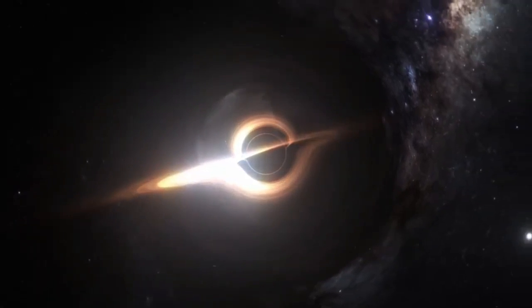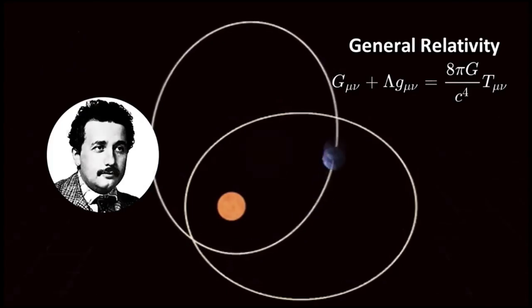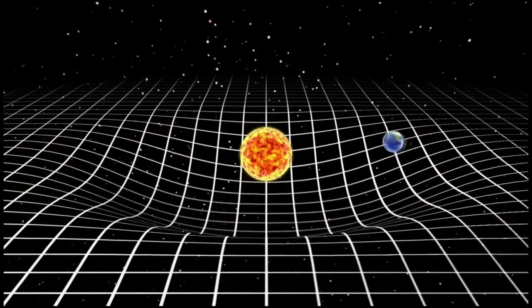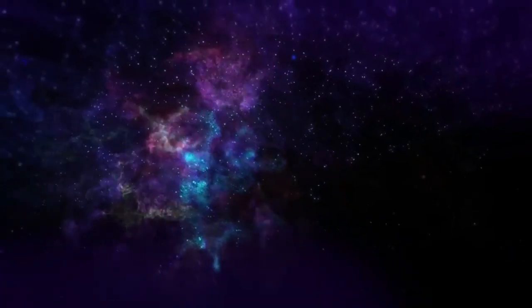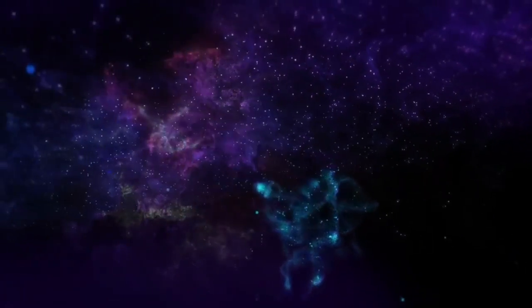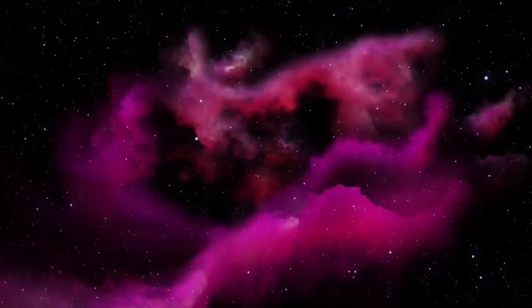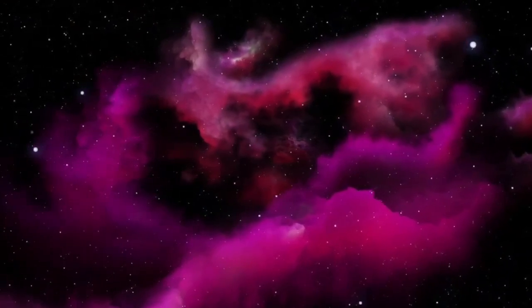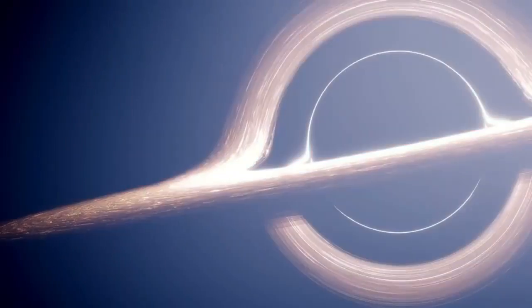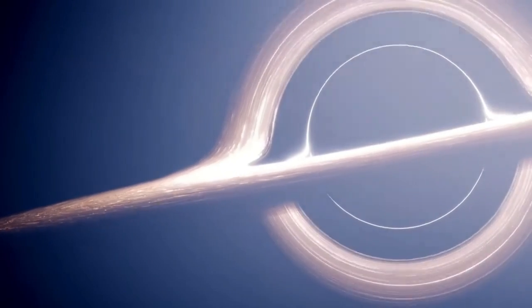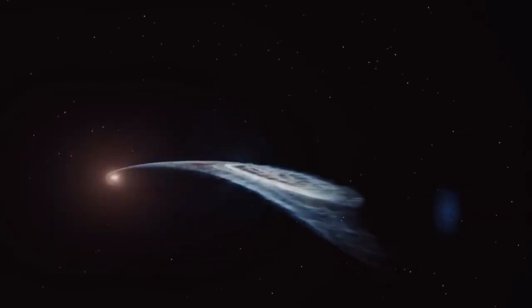Black holes can be described using general relativity equations. The theory describes the curvature of spacetime caused by the presence of matter or energy. In the case of a black hole, the mass creates a large enough curvature of spacetime that anything that gets too close is pulled in and never escapes. The event horizon is defined at the point where the escape velocity exceeds the speed of light, making escape impossible once crossed.